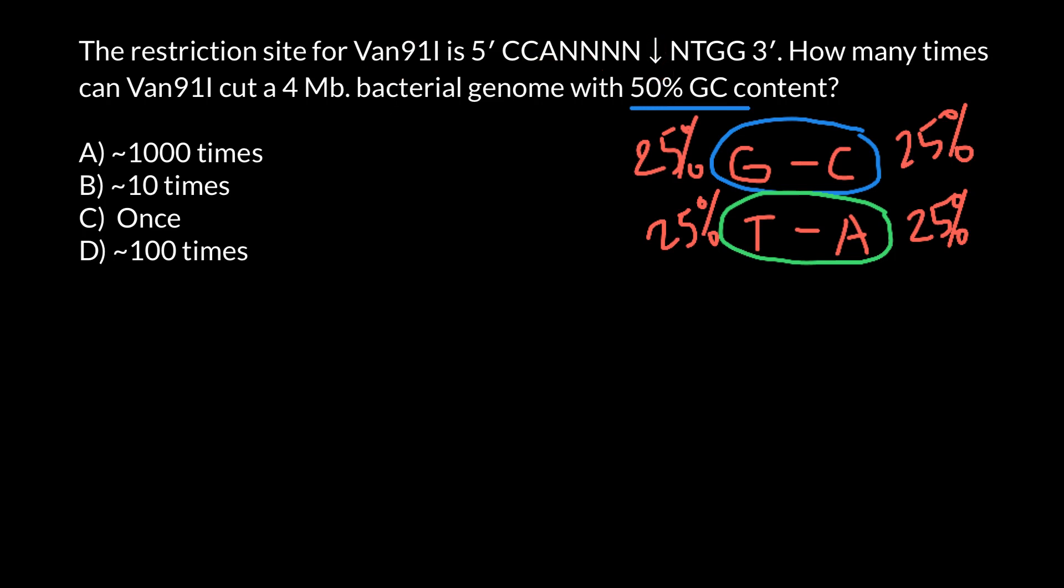So we have here 1, 2, 3, 4, 5, 6, 7, 8, 9, 10, 11 bases. Let me rewrite it. Here is the 5' end, and each empty box would stand for one base: 1, 2, 3, 4, 5, 6, 7, 8, 9, 10, 11, and the 3' end here.